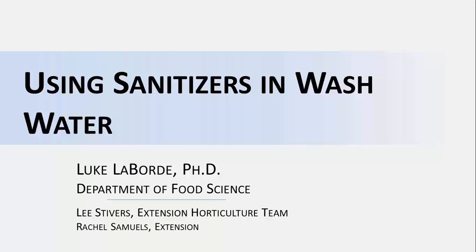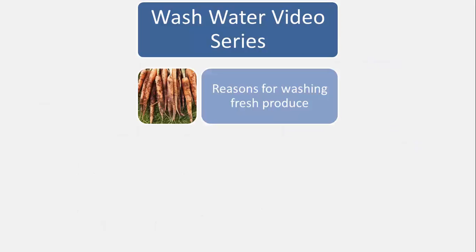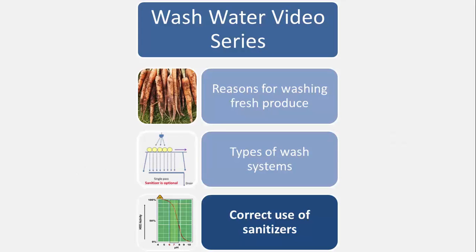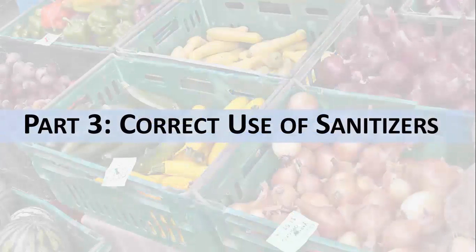This is the third and final video in our series on using sanitizers in wash water. In the first two videos, we discussed reasons for washing fresh produce and types of wash water systems. In this third video, we will focus on the selection and correct use of sanitizers. Part 3 – Correct Use of Sanitizers.